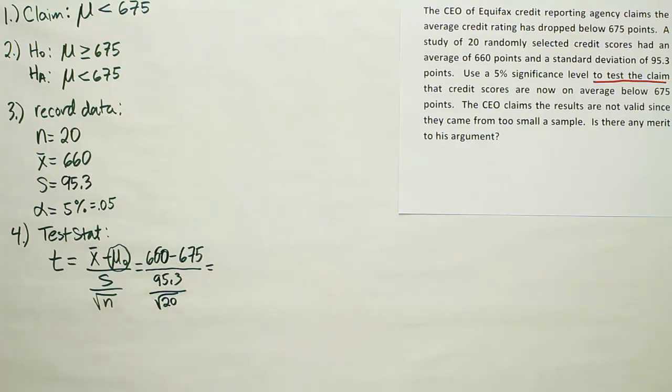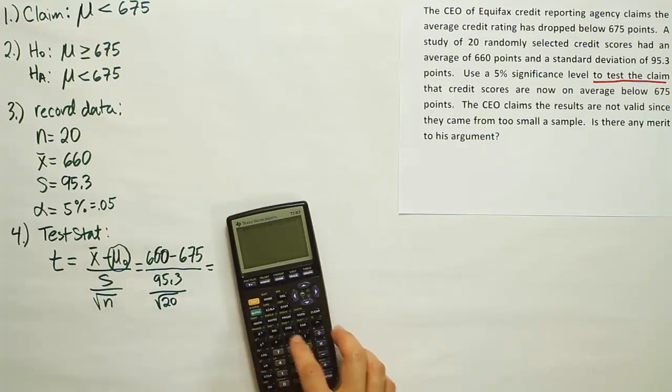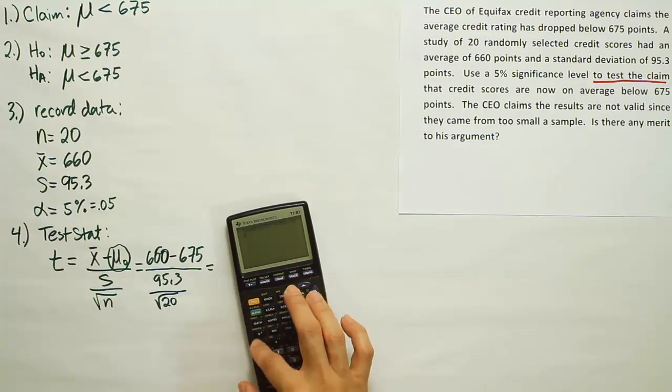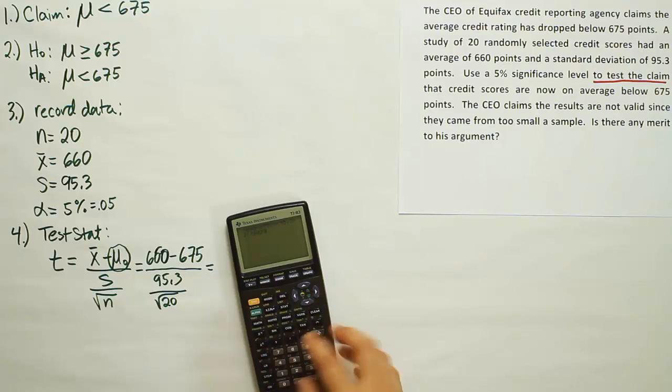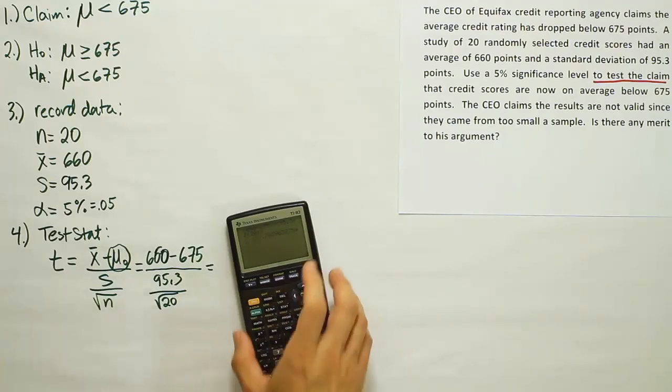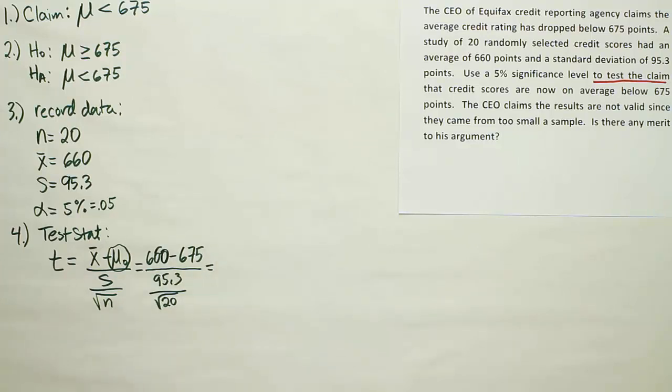So let's plug all that into our calculator and see what we end up with as our final answer. So we have 660 minus 675. That'll give us a negative 15 on top. We will divide that by 95.3 divided by the square root of 20. And once we do all of that, we end up with the answer minus 0.70.